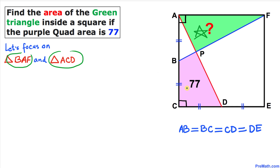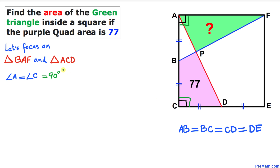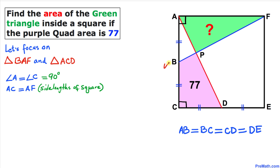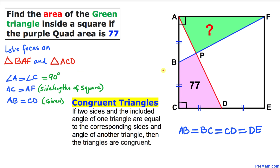In both of these triangles, angle A and angle C are 90 degrees. Moreover, side AC equals side AF because they are the side lengths of the square. And moreover, side length AB equals CD as that has been given to us.